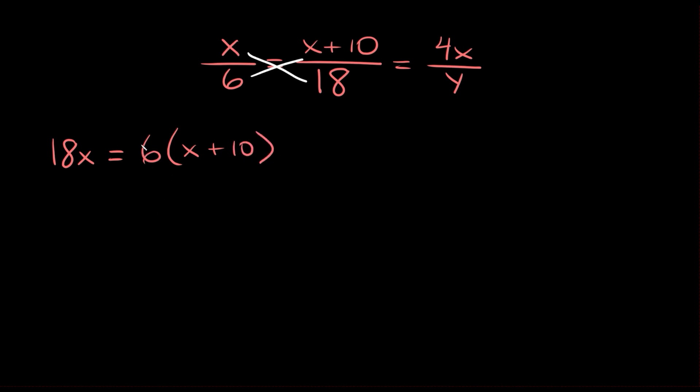Now we can distribute this 6 into the set of parentheses. So 6 times x equals 6x and 6 times 10 is 60. And again that equals 18x.